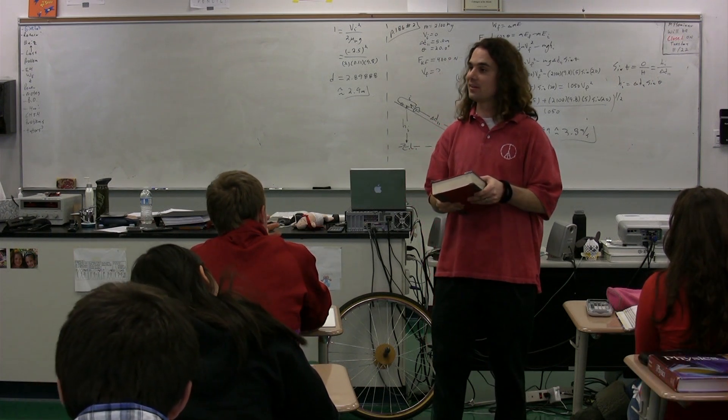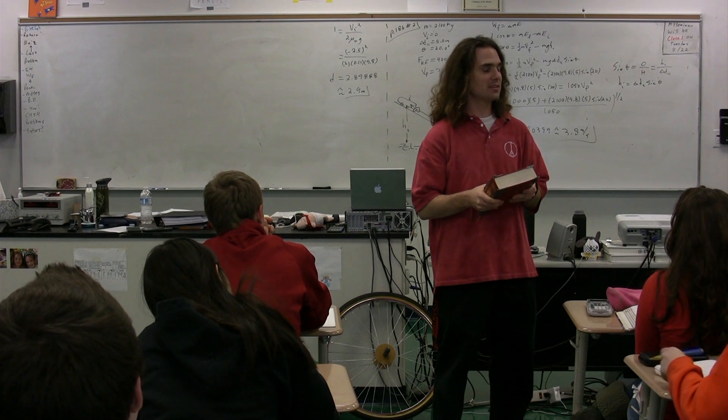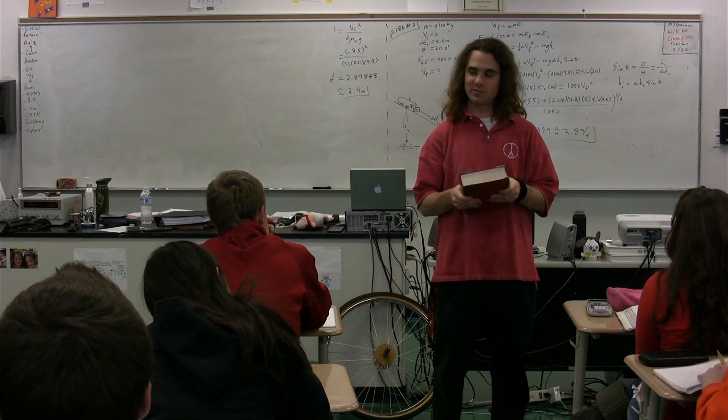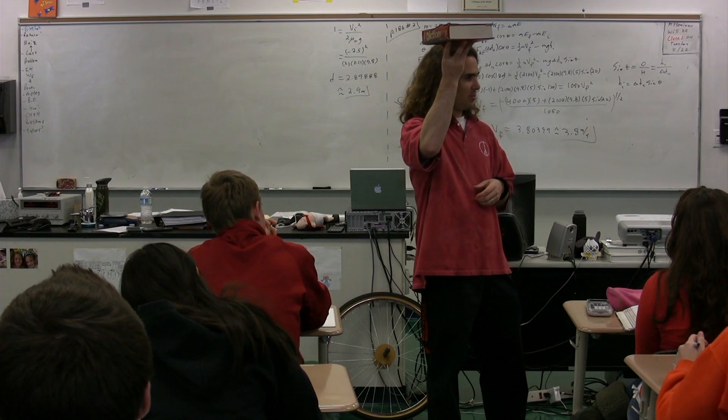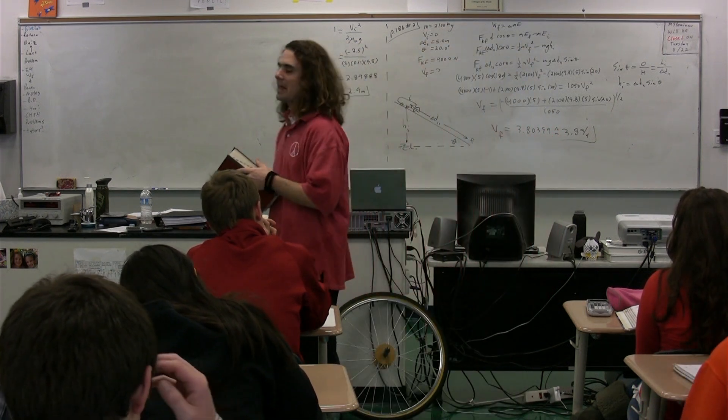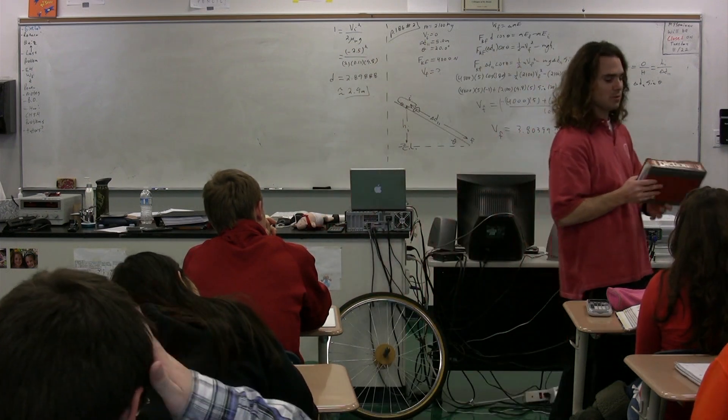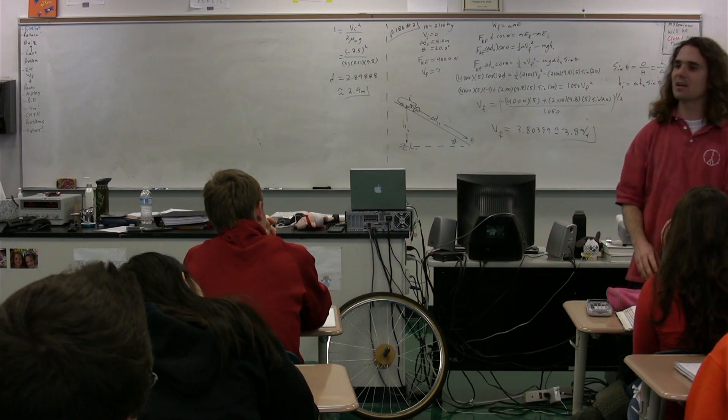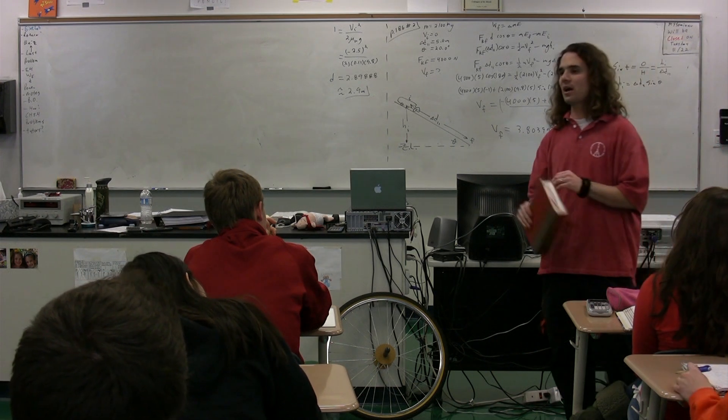So the force applied is up, right? The displacement is up. The angle between up and up is 0. Cosine of 0 is 1, so I do positive work as I lift the book. Notice in both cases that because I'm moving at a constant velocity, the force applied will be of the same magnitude, the displacement will be of the same magnitude, the angle is the same. Therefore, in both of those instances, the amount of work I do on the book is exactly the same.